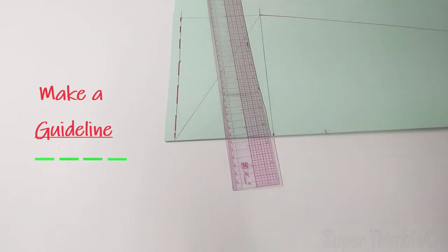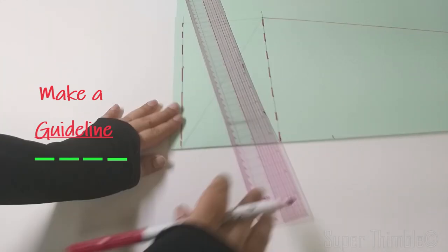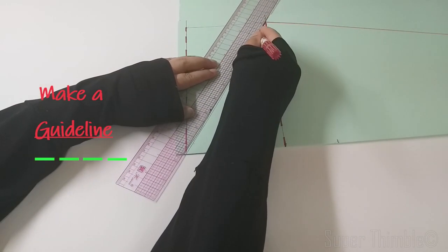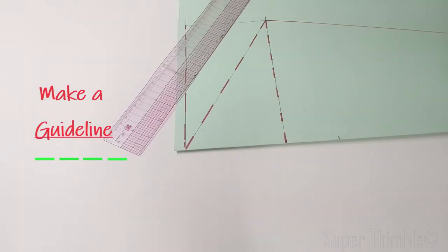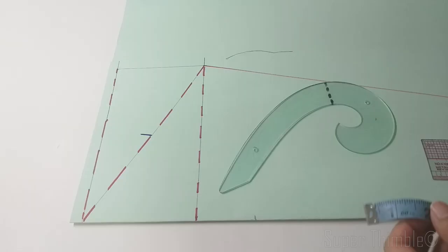Join the side of sleeves by joining the hemline and the diagonal line. Make a guideline on the marked point of sleeve cap and diagonal line. On the diagonal line, take the midpoint and mark half inch upwards.